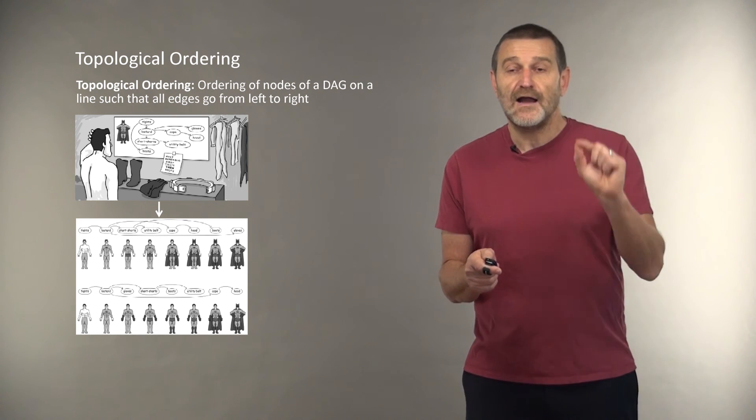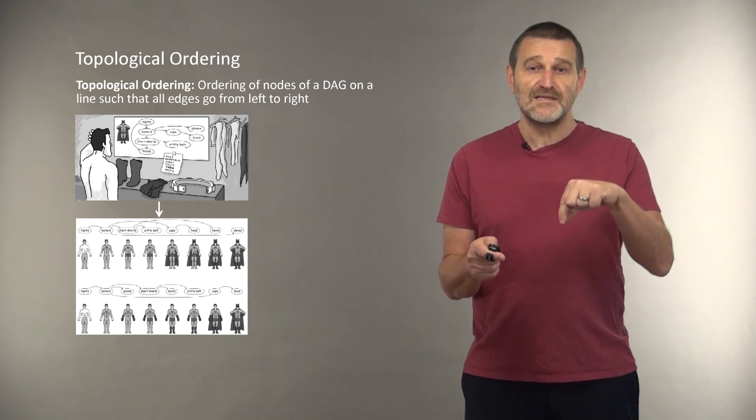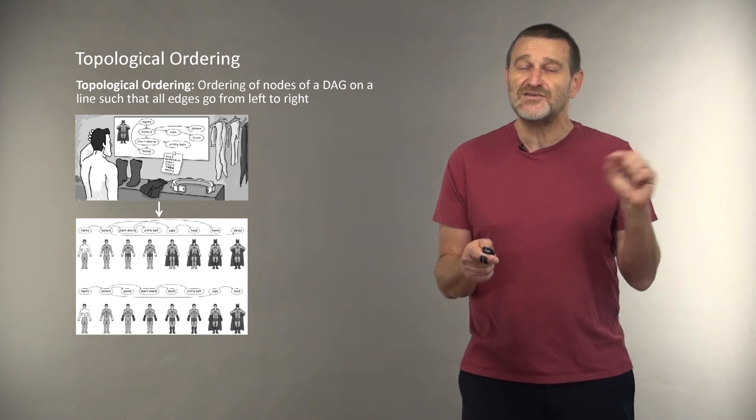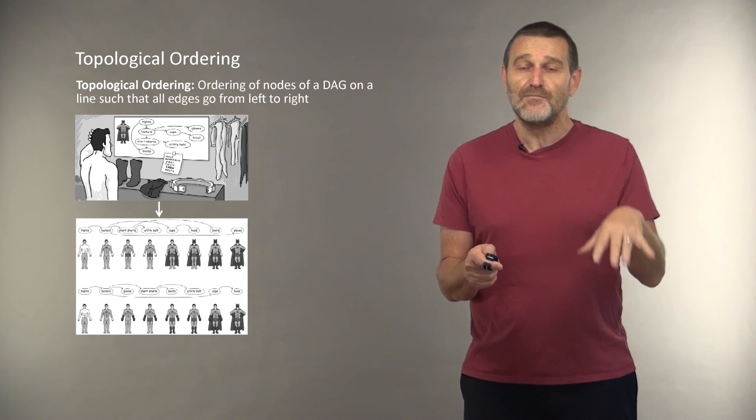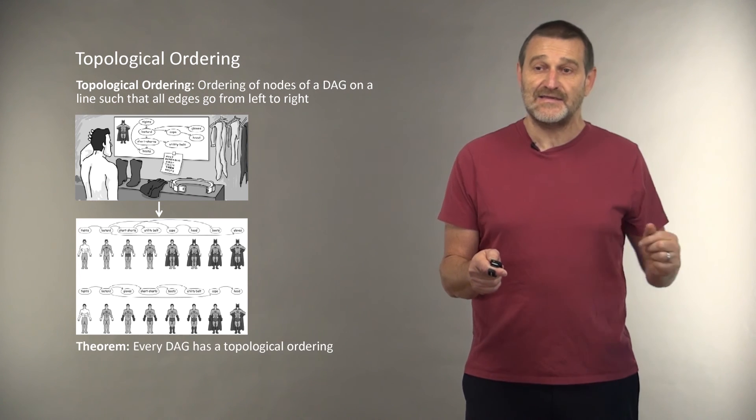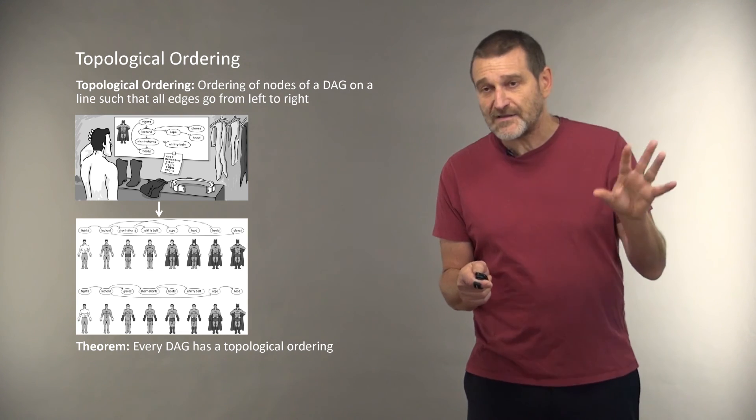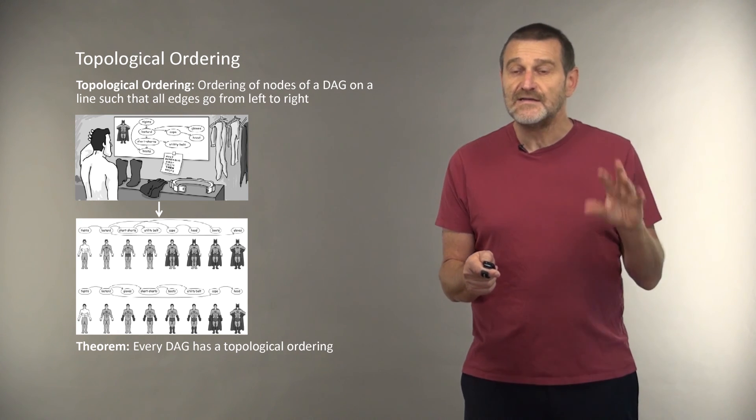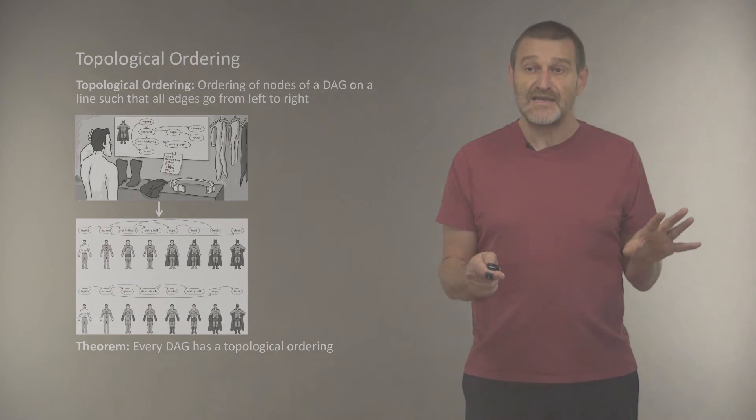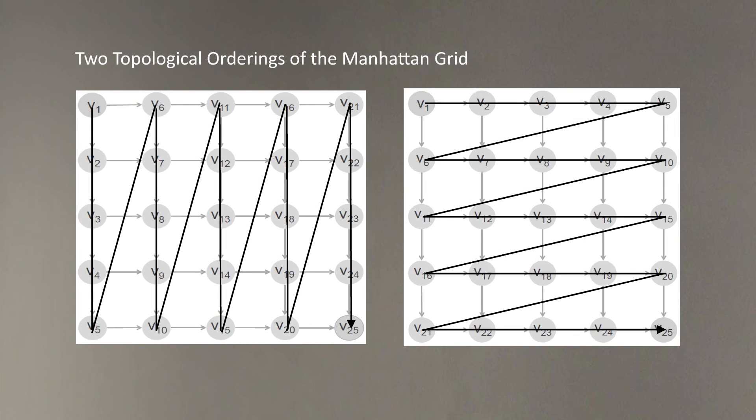Because by the time Batman needs to put something on, all necessary things already have been put on in this particular case. And there is a simple theorem that we are not proving, but you can try to prove it yourself, that every DAG has a topological ordering. And in fact, for our Manhattan grid, there are many different topological orderings, and two of them are shown on this slide.